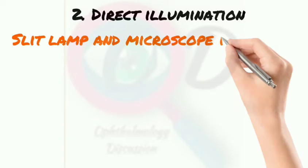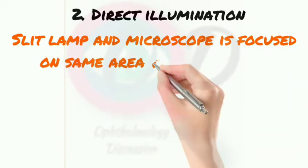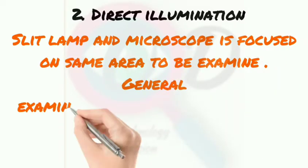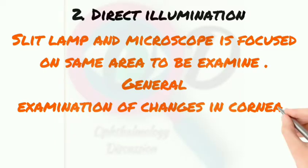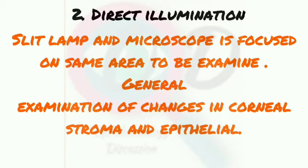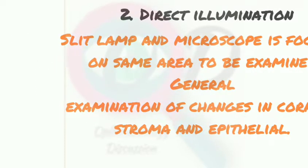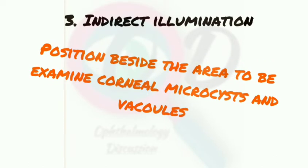The second is direct illumination. Direct illumination is a broad beam where the slit lamp and microscope are focused on the same area to be examined. Whenever you want to examine the eye of a subject with direct illumination, you focus on that same area. Direct illumination is used to see changes in corneal trauma or epithelial changes.